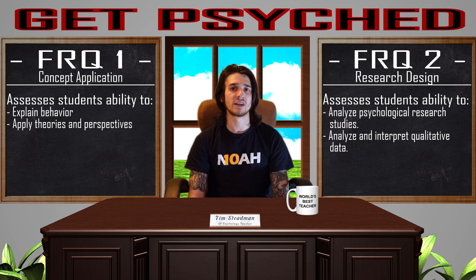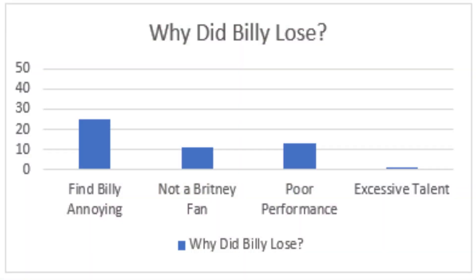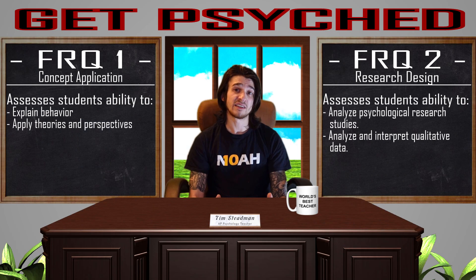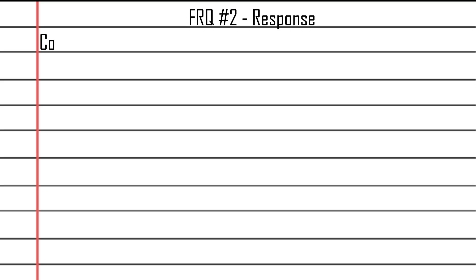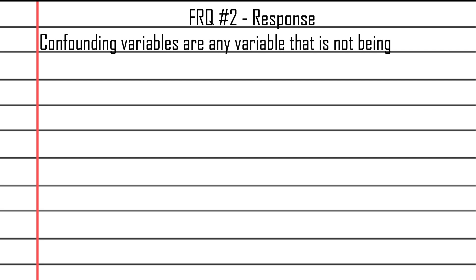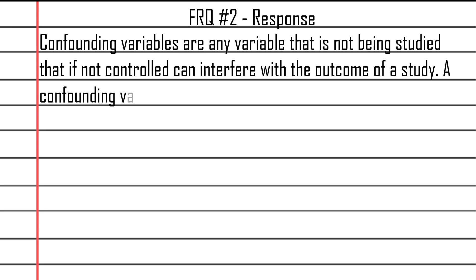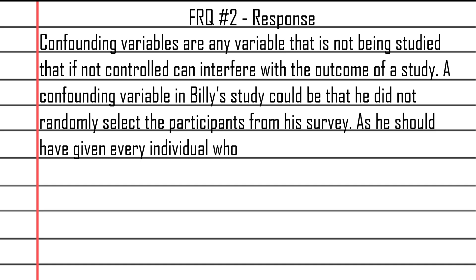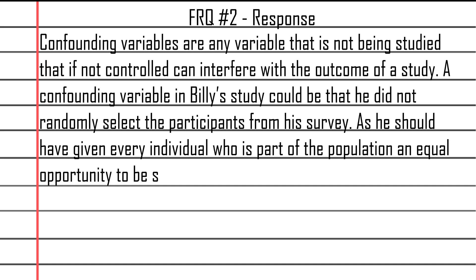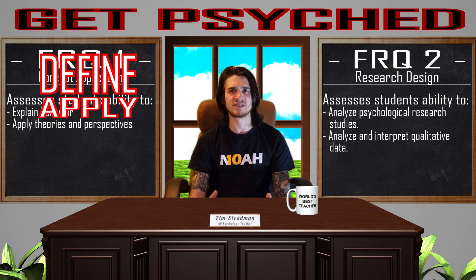We are tasked with analyzing a graph from a survey and identifying different components of the research. It is still important to define and apply each term. For example, confounding variables are any variable not being studied that, if not controlled, can interfere with the outcome of the study. A confounding variable in Billy's study could be that he did not randomly select participants — he should have given every individual in the population an equal opportunity to be surveyed, not just those who arrived early. So again: define, apply, skip a line, next term — just more focused on research design.